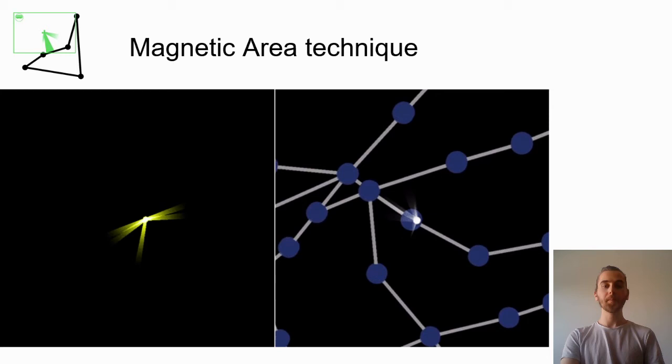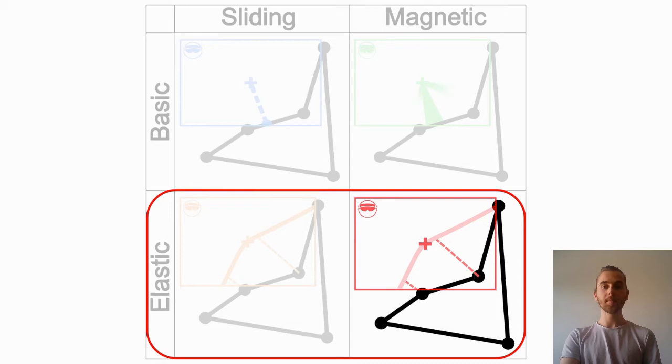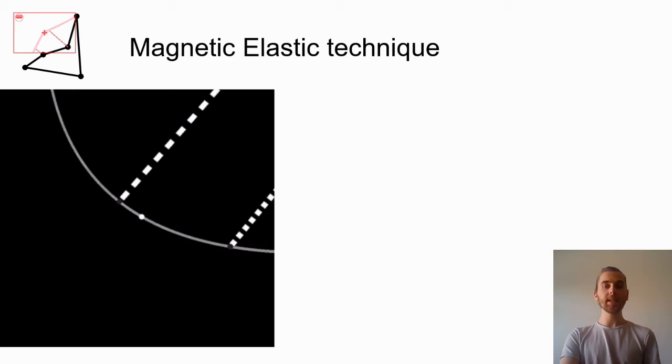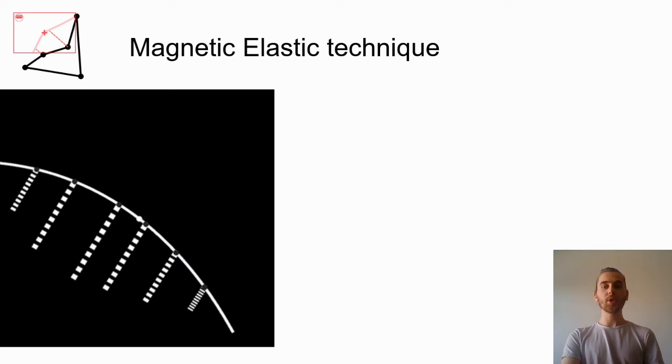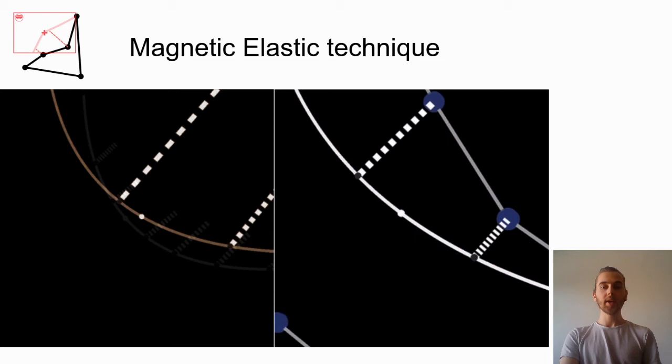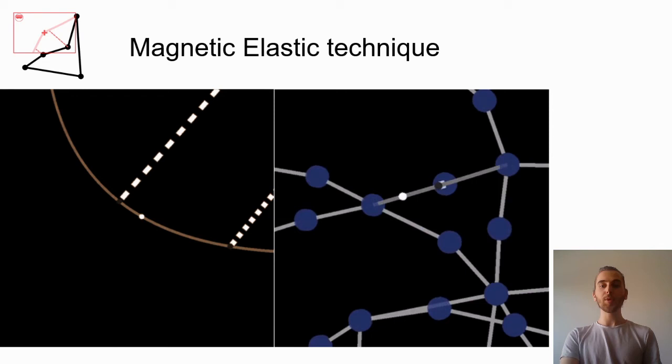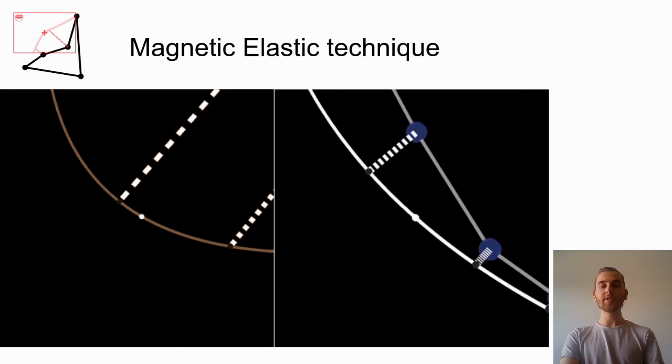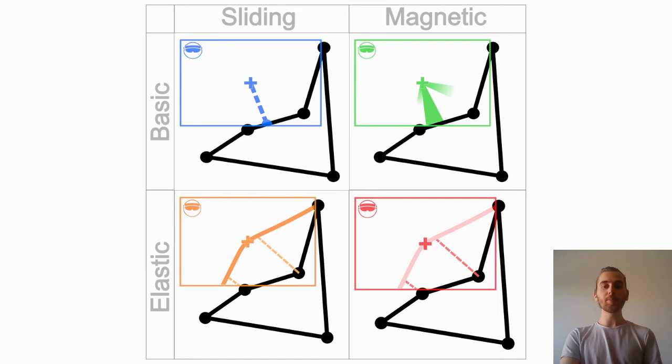We also have an elastic variation for this technique. The elastic variation of the magnetic metaphor, called magnetic elastic, has the same visuals as the sliding elastic technique. You can see what is rendered in the headset on the left, and on the right, together with the network on the large display. You can freely move in between links, and the bending subpath will fade, here shown as getting darker, to show the risk of disconnecting from the current subpath. We refer you to the paper about technical and design details for these techniques.